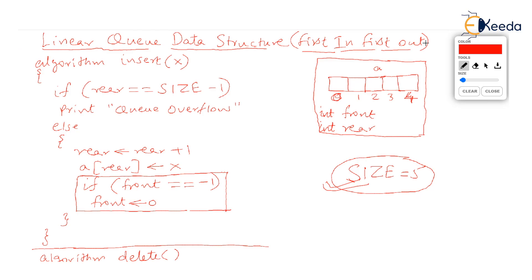When the queue is empty, we initialize both front and rear to minus 1. This is logical because by making front and rear minus 1, we indicate that even the 0th position is not filled. If front and rear are minus 1, it means the queue is empty. The queue shown with front and rear as minus 1 is an empty queue.